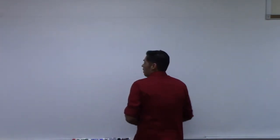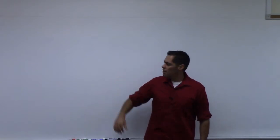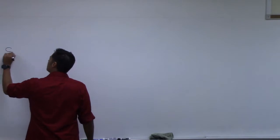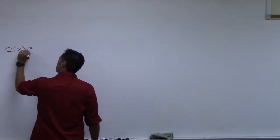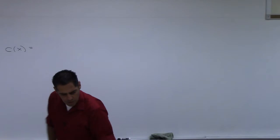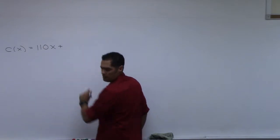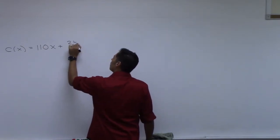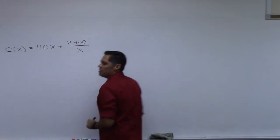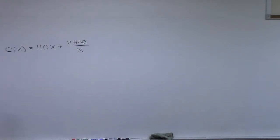All right, so let's talk about the problem that I offered you as a bonus. We had talked about building a particular enclosure — a farmer was building this thing — and we had come up with a cost function: C of x equals 110x plus 2400 over x. We wanted to look for the minimum value of this, because this represented the cost for building those pens.